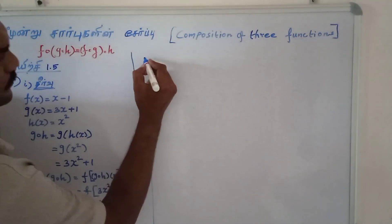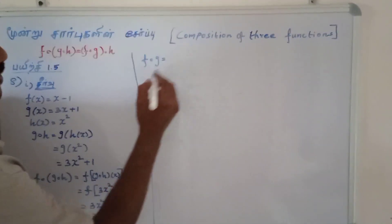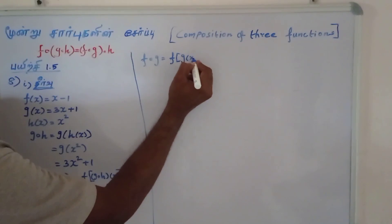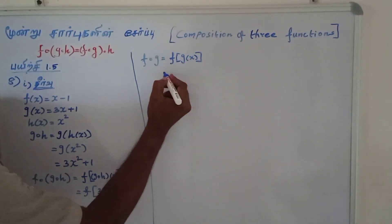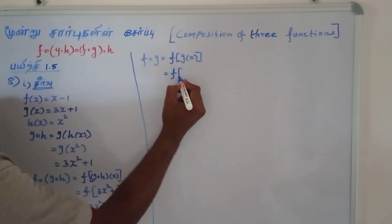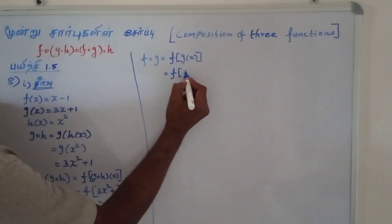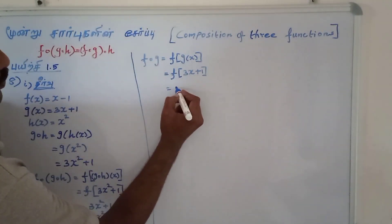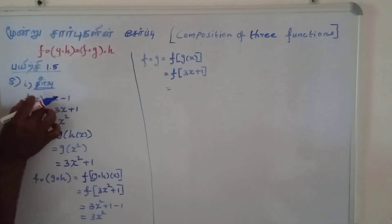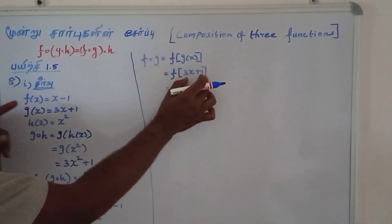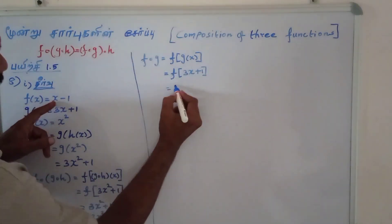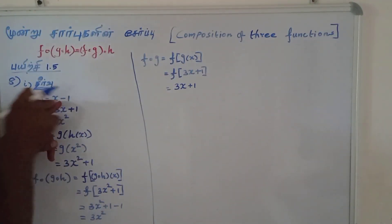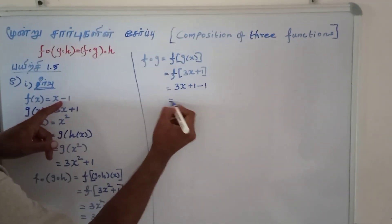F∘G into this — F of G of X. G of X gives 3x plus 1. F of x: x minus 1, minus 1 plus 1, minus 1 cancel.